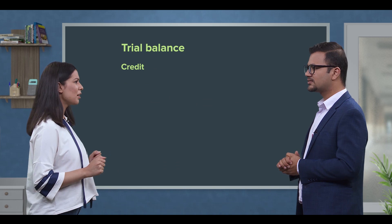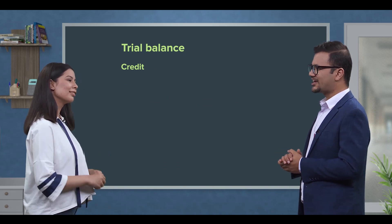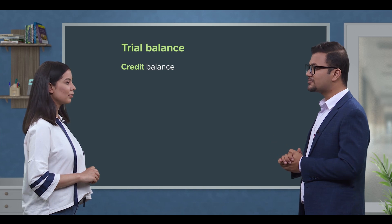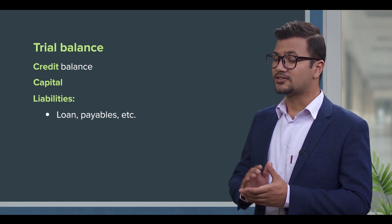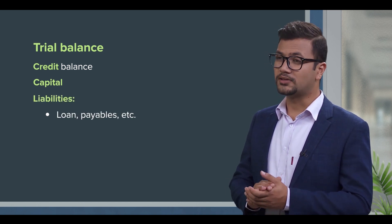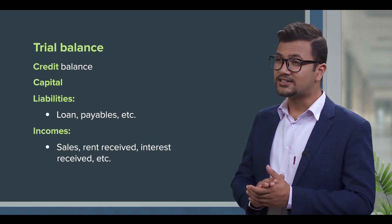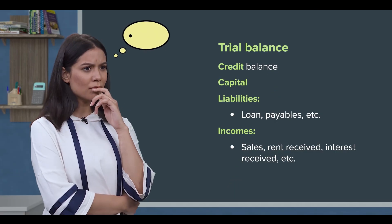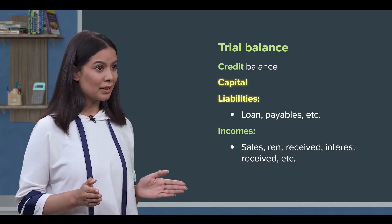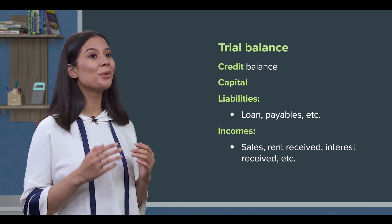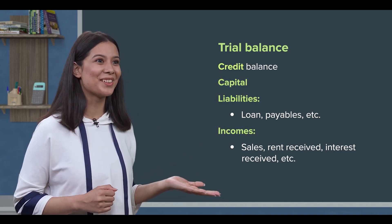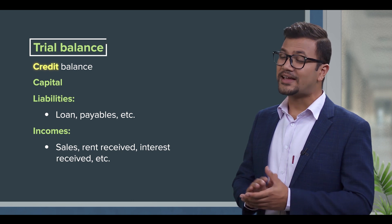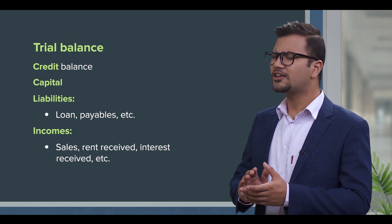On the credit side, Trial Balance records items with a credit balance. You record capital, business liabilities, loans, payables, and incomes — such as sales, rent received, and interest received. So, capital, liabilities, and incomes are recorded in the credit balance.